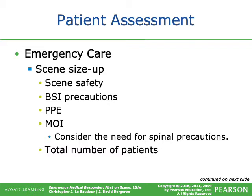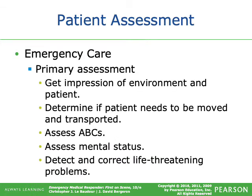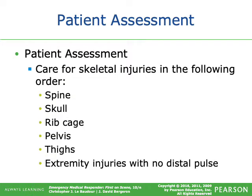Emergency care begins with scene size-up: scene safety, BSI, PPE, and mechanism of injury — consider the need for spinal precautions and get a total number of patients. Primary assessment includes a general impression of the environment and patient, determining if the patient needs to be moved, assessing ABCs and mental status, and detecting and correcting life-threatening problems. Care for skeletal injuries in this order: spine first, then skull, rib cage, pelvis, thighs, and extremity injuries with no distal pulse.